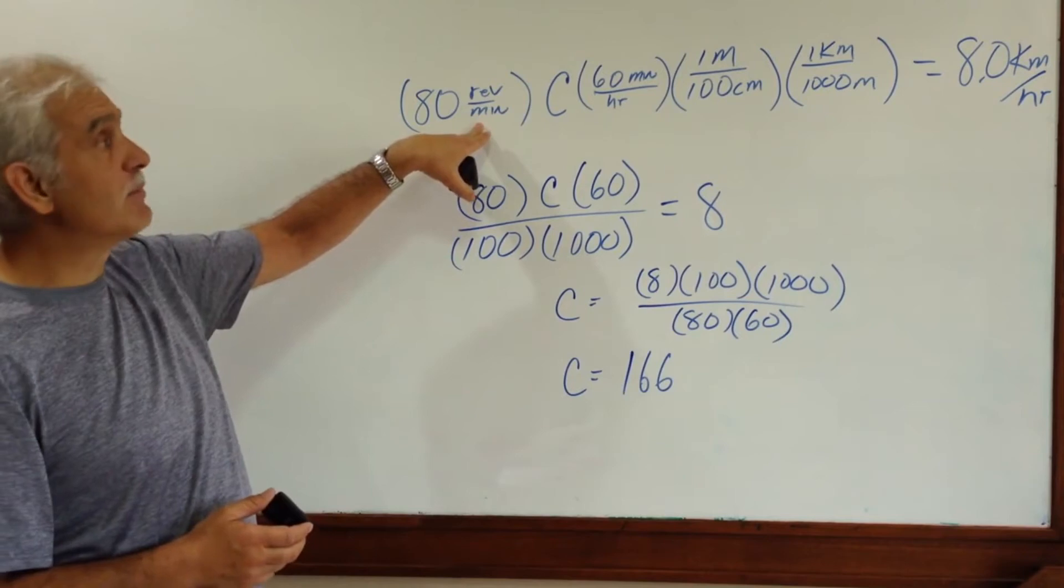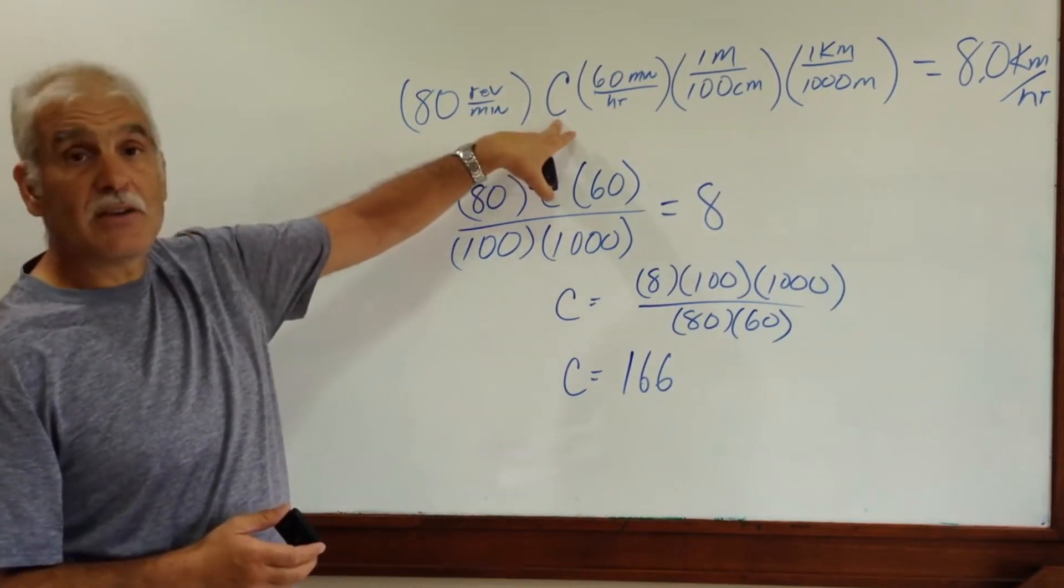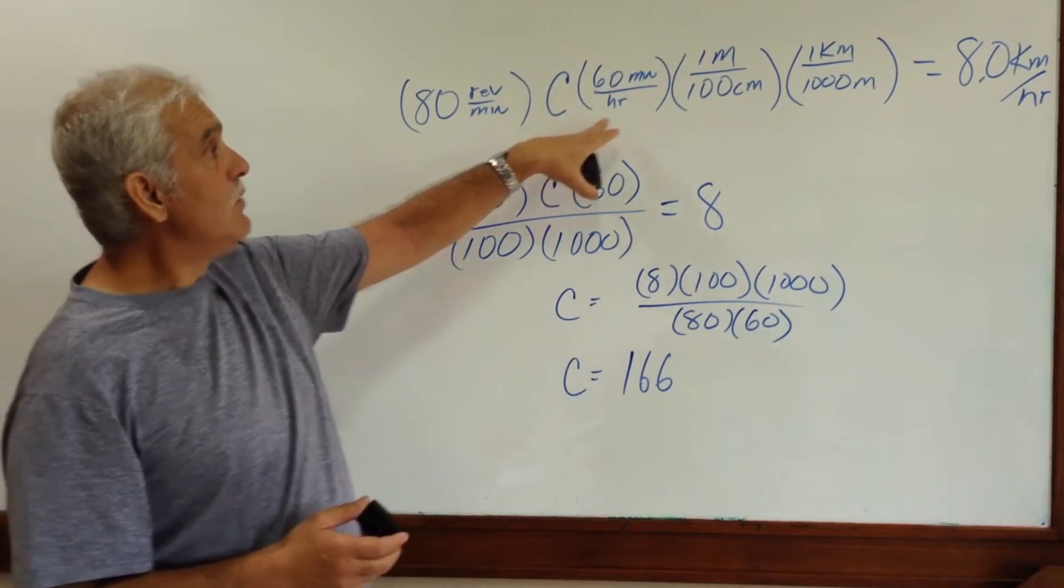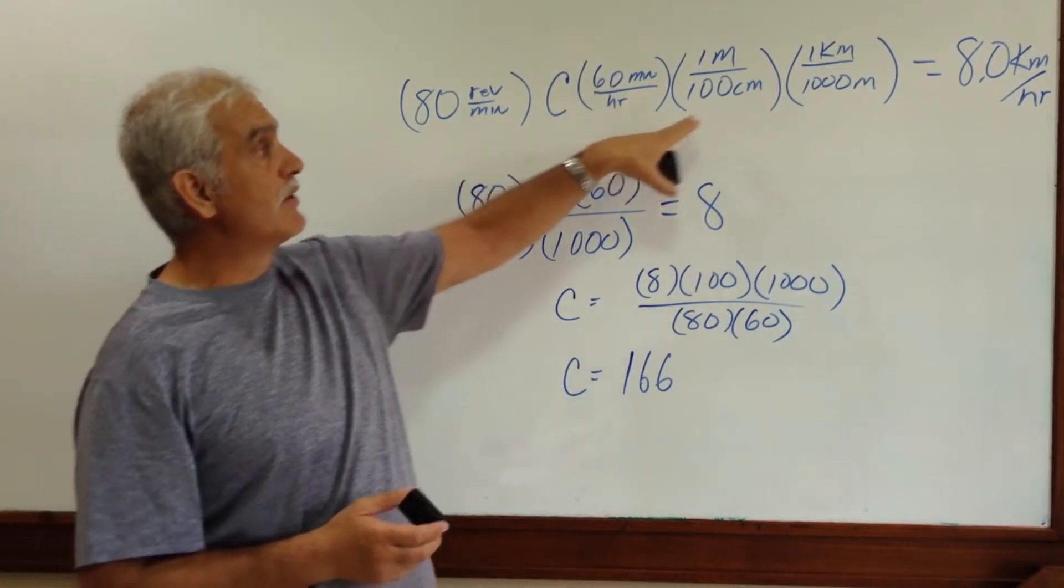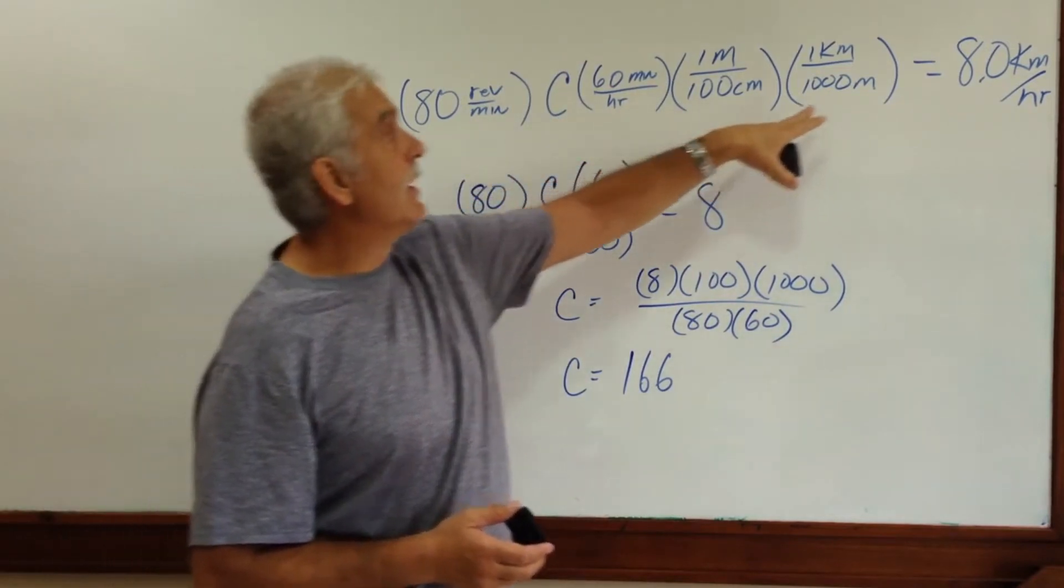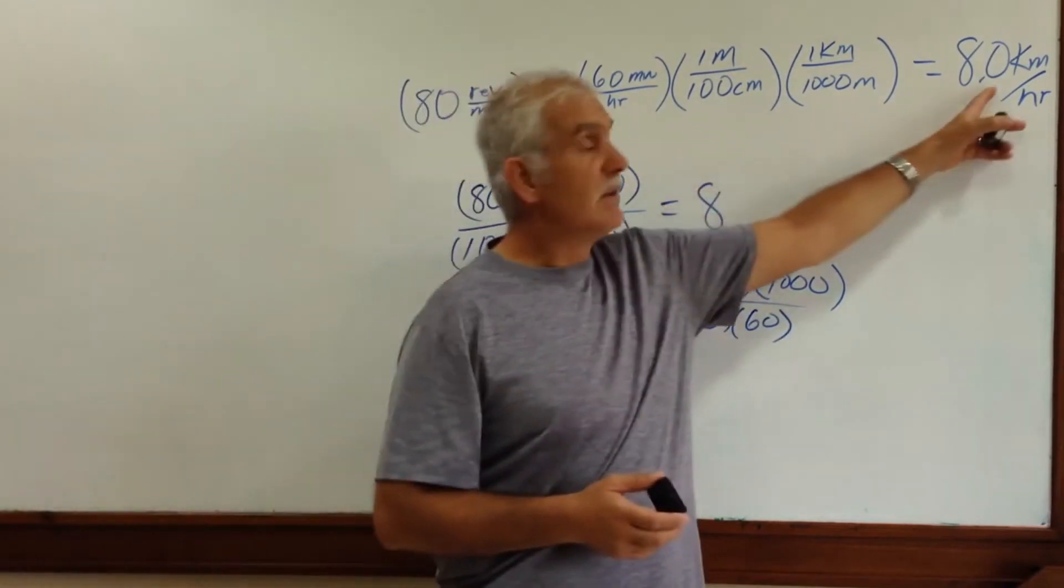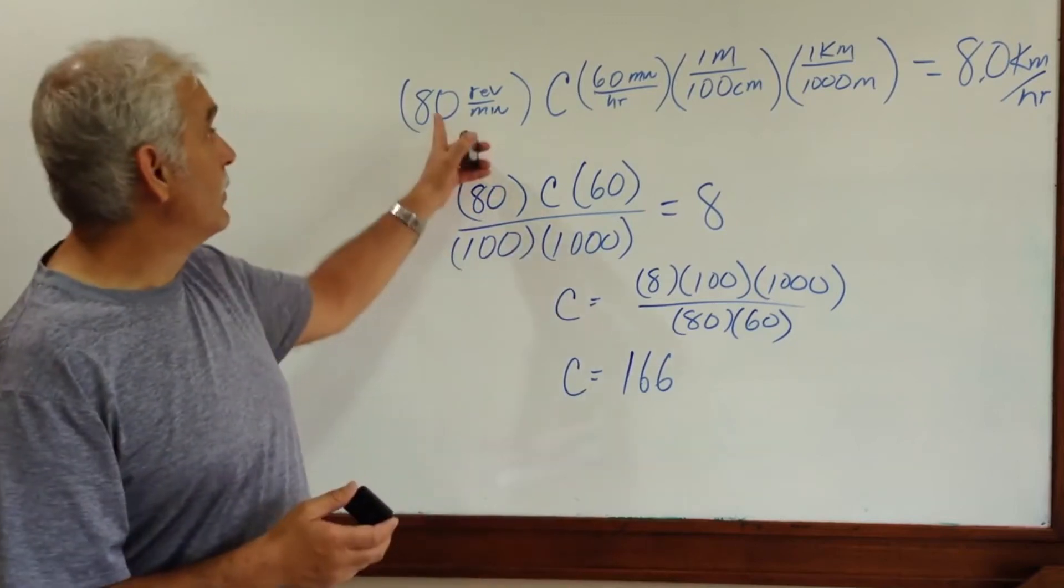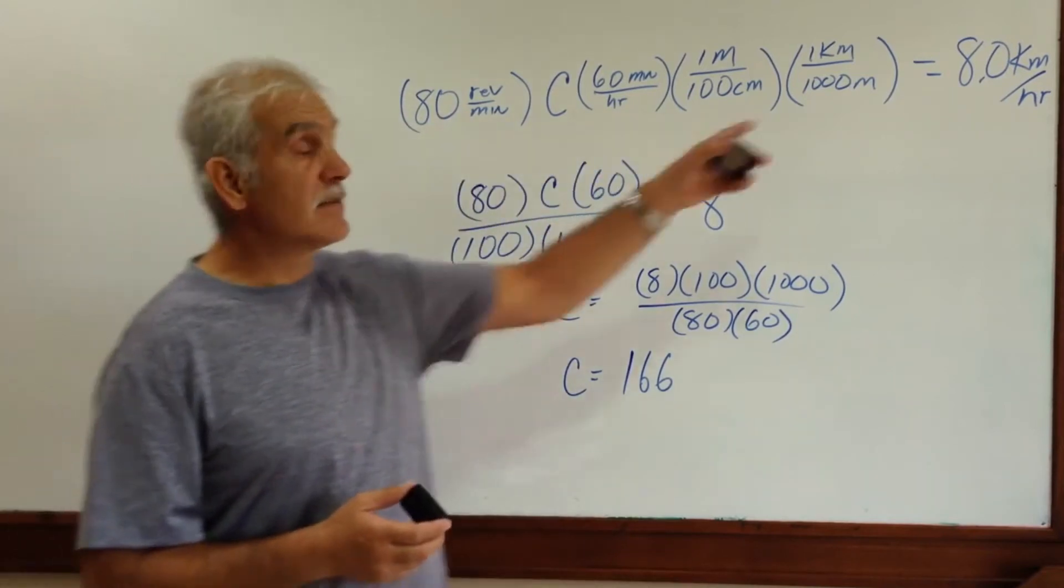So I'm going to target 80 revolutions per minute, calculate this circumference value, that's what we're going to solve for, and do the conversions from minutes to hours and meters and centimeters and kilometers to meters, and make that come out to 8.0 kilometers per hour as opposed to 80 revolutions per minute. But that's the same number.